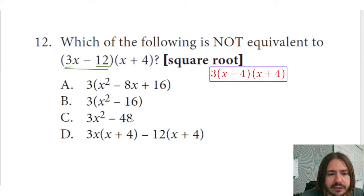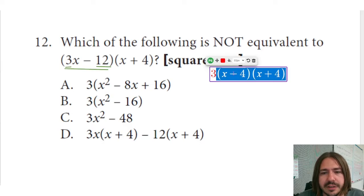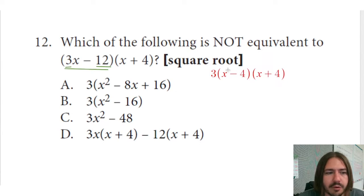I'm looking at these answer choices. It doesn't really look like any of them, so I'm going to keep going. From here, I can multiply these two together using FOIL or the distributive property. Essentially, what I want to do is just multiply x times x and then x times 4.